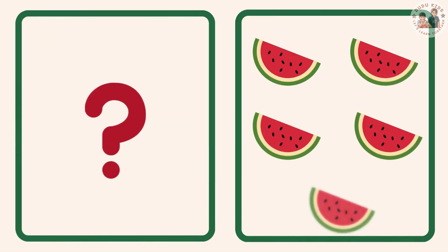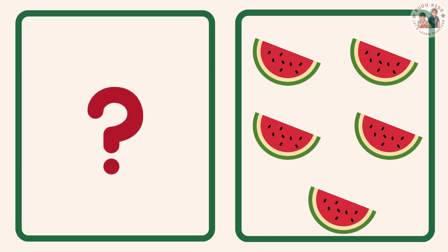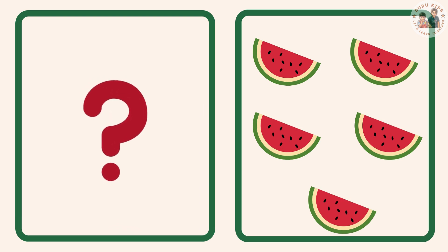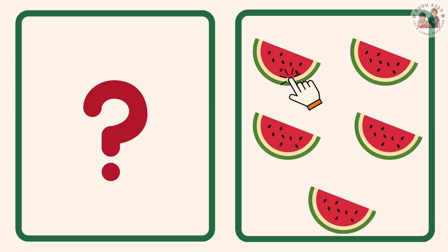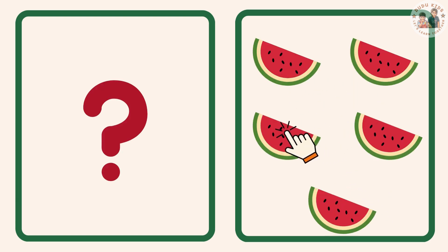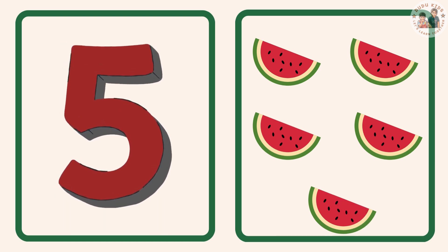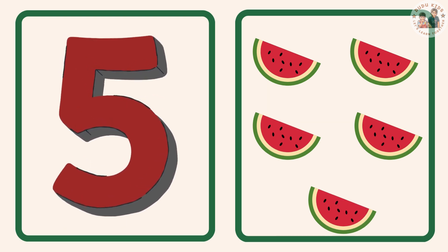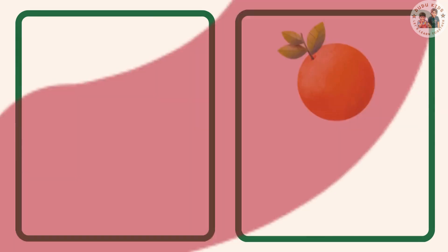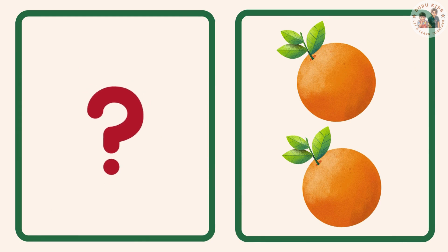What's the number? Can you find the number of watermelon? Two? No. One, two, three, four, five. Five watermelons. Yes. Now find the number.